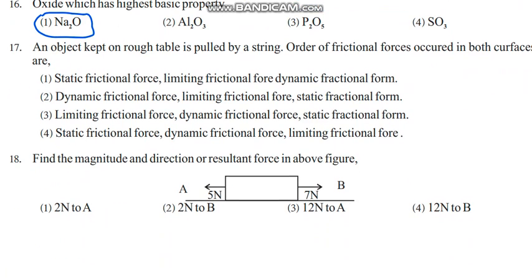An object kept on a rough table is pulled by a string. Order of frictional forces occurred in both surfaces: the order is first static, then limiting, then dynamic. This is the order of frictional forces. First one is the answer.